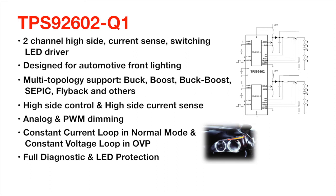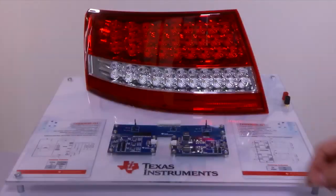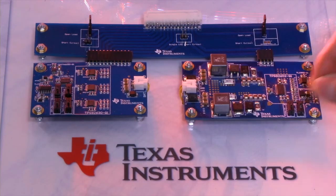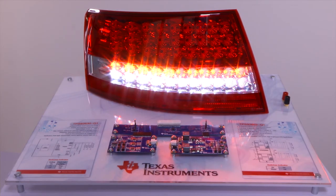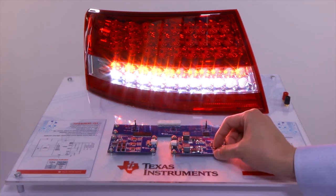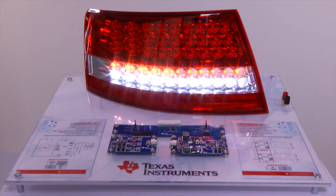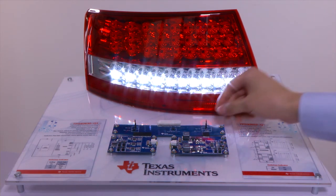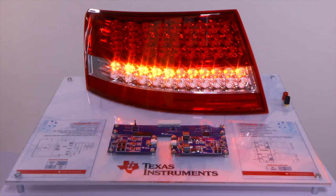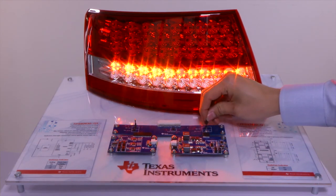There is also a pin-to-pin single-channel version, TPS92601-Q1, making this family of devices ideal for your full LED front light systems. Here we are using one TPS92602-Q1 to connect two LED strings. You can see from this demo that two channels can work individually. When an open happens to one channel, there is no impact to the other channel, allowing the TPS92602-Q1 to recover automatically.